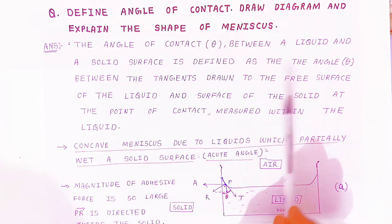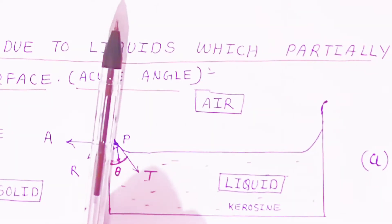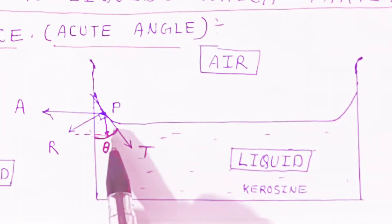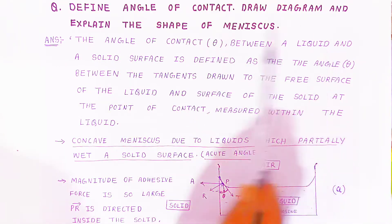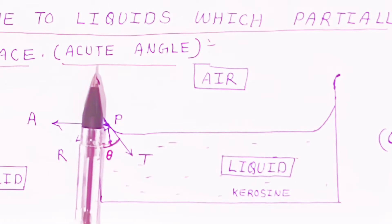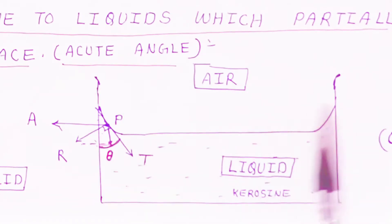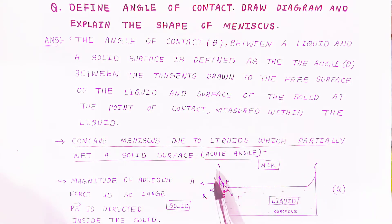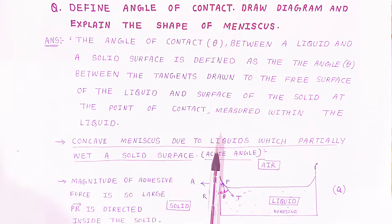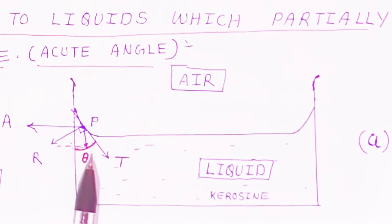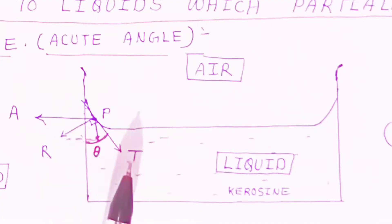The angle of contact theta is measured between the tangent drawn to the free surface of the liquid and the surface of the solid — that is, the container or beaker — at the point of contact, measured within the liquid from the liquid side. This angle is called the angle of contact.